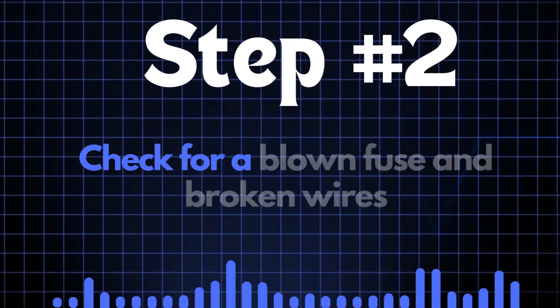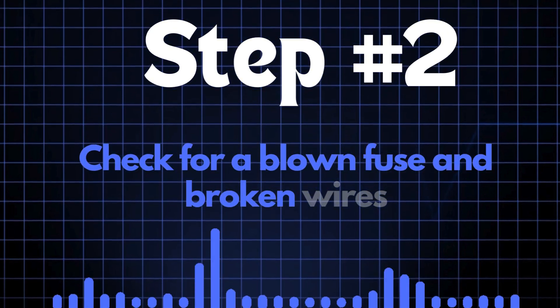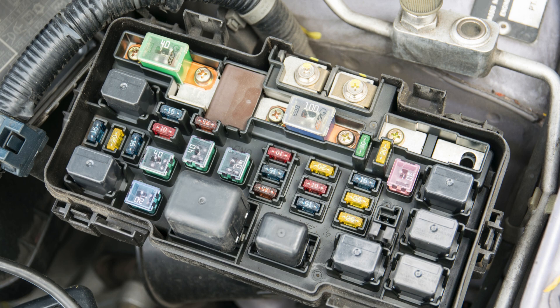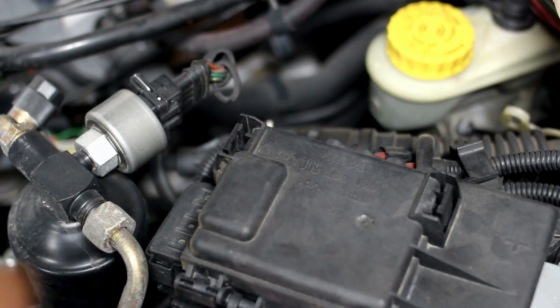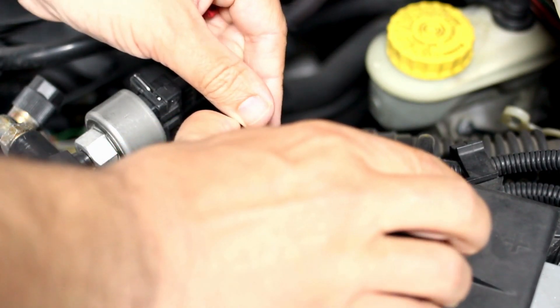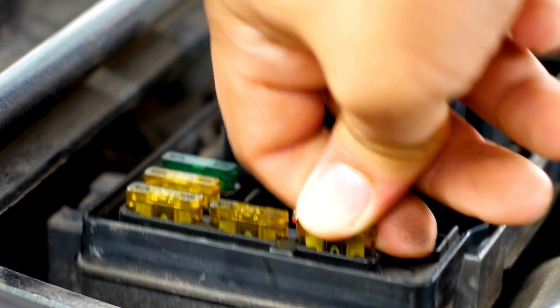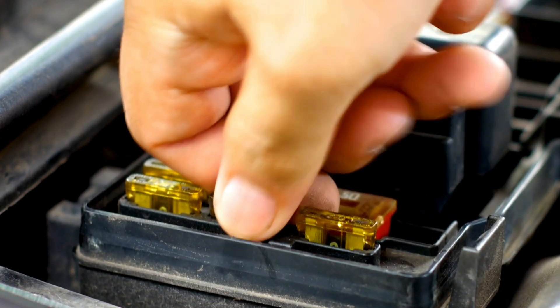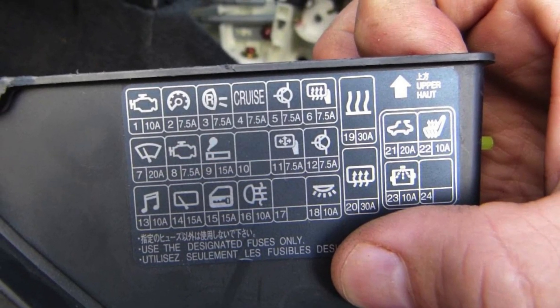Step 2. Check for a blown fuse and broken wires. First, locate your car's fuse box. You'll need to find the specific fuse that controls the oxygen sensor heater circuit. To do that, check the diagram on the back of the fuse box cover. It'll tell you which fuse is the one you're looking for.